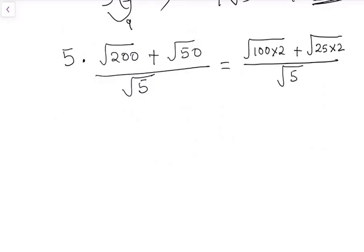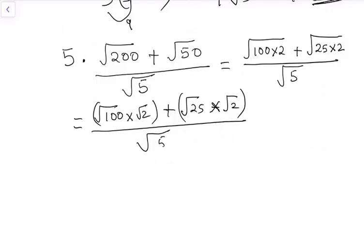With this step in itself, we have done 75% of the problem. The rest is just to really walk through. We'll break it down to square root of 100 and square root of 2 plus square root of 25 times square root of 2 over square root of 5.